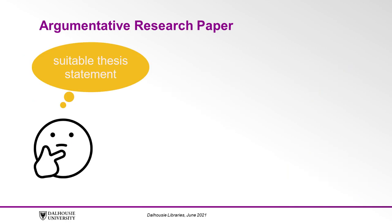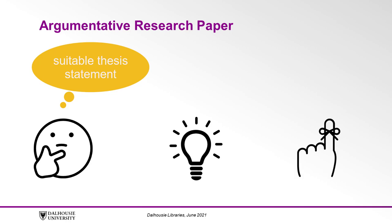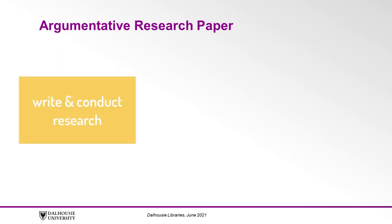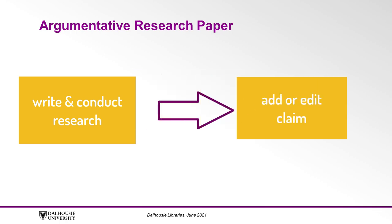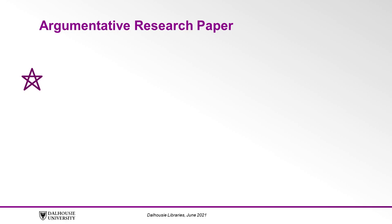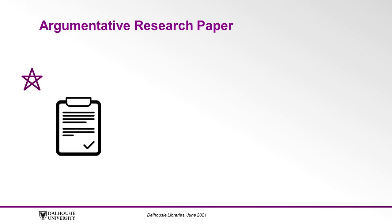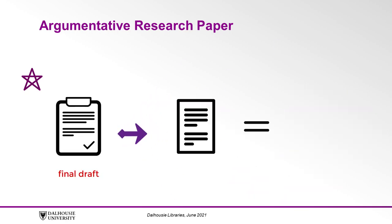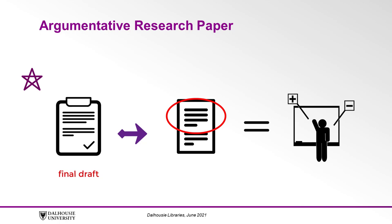To come up with a suitable thesis statement, it can help to think of one specific claim you would like your reader to remember from your paper, even if they forgot everything else about it. As you write and conduct further research, you might find that you need to add to or edit this claim somewhat. This is a normal part of the research process. The most important thing is that, in the final draft, your thesis matches the argument you actually make in your paper.